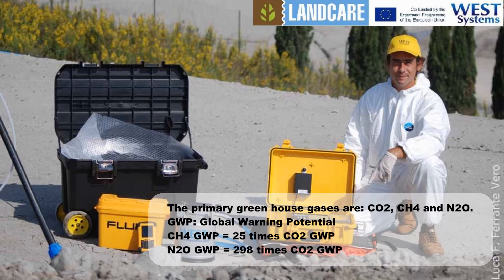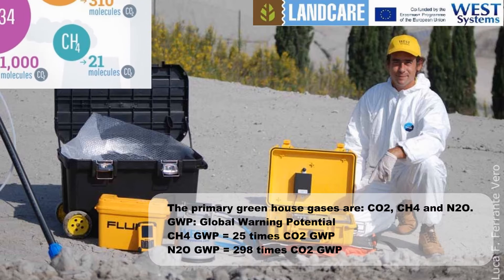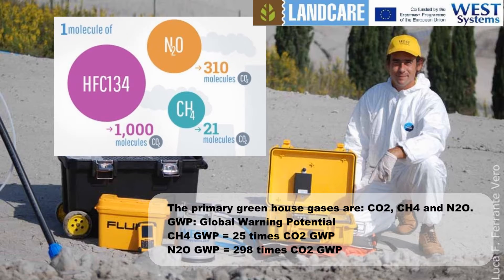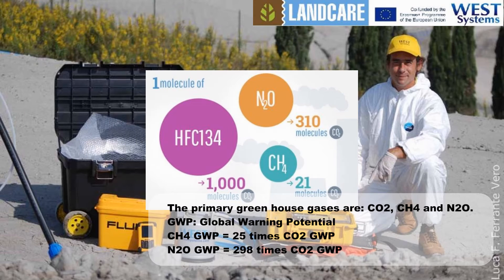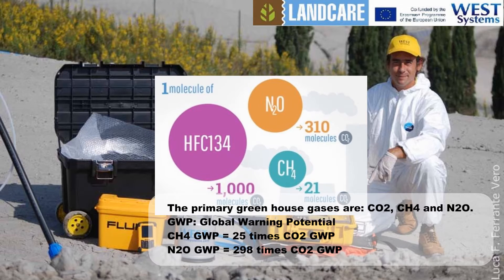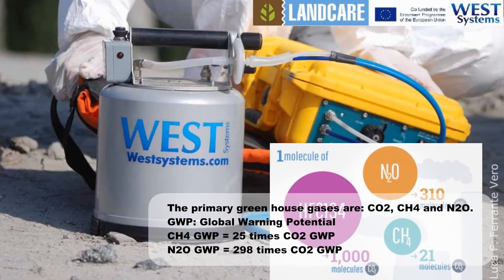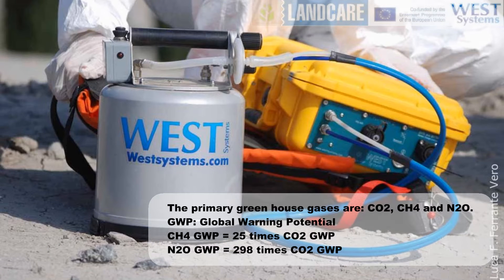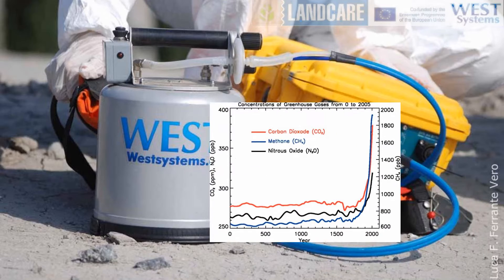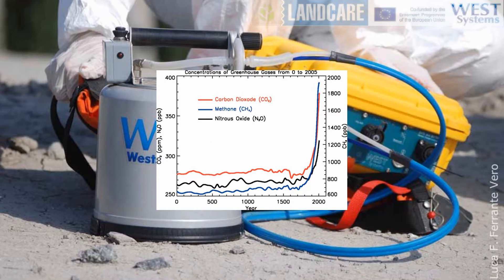The global warming potential for each molecule of methane is 25 times that of carbon dioxide. The global warming potential for each molecule of nitrous oxide is 298 times that of carbon dioxide. The amount of greenhouse gases in the atmosphere is increasing rapidly, causing the earth's climate to change.